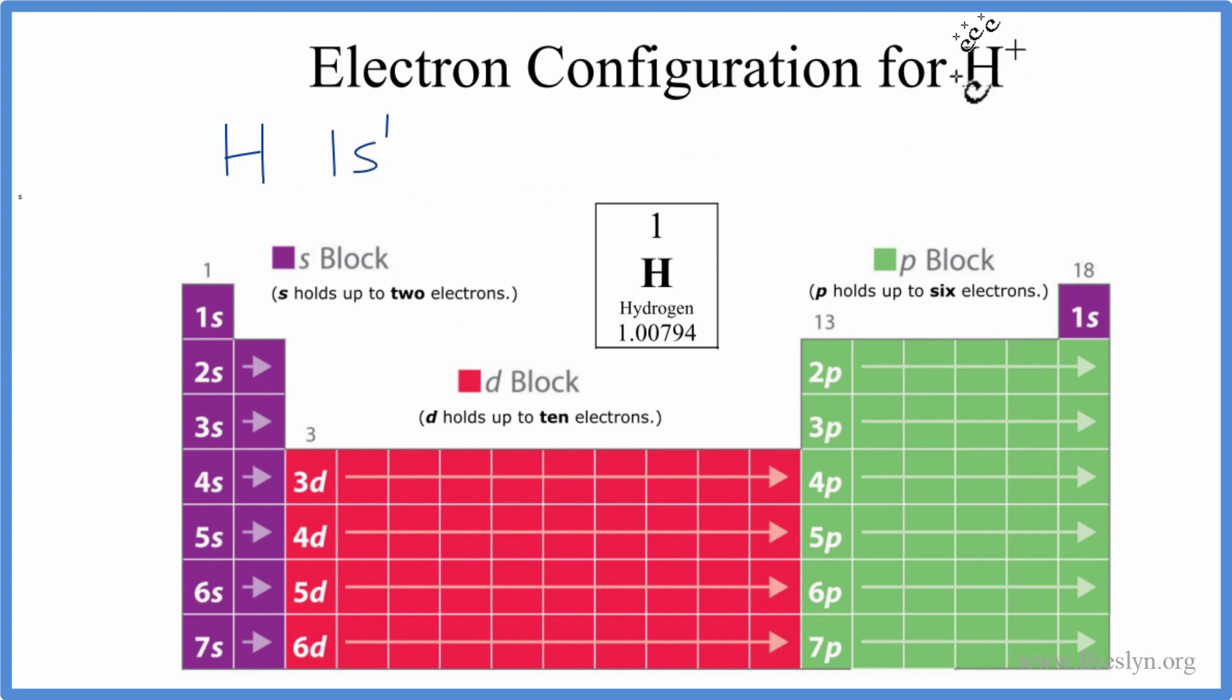But we want H+, the hydrogen ion. When you have a positive, that means it lost an electron. Electrons are negative, so if you lose one, you become positive. So the hydrogen lost an electron to become H+. So to write the electron configuration for H+, that means we've lost this electron here. So we actually have zero electrons. So let's put a zero up here, and the electron configuration for H+ is 1s0.